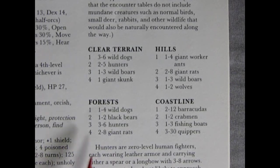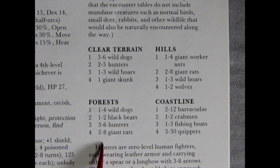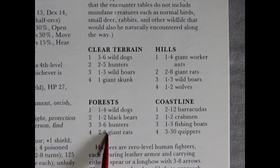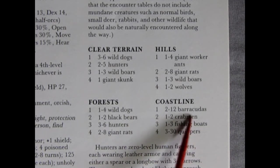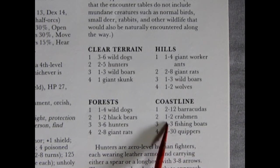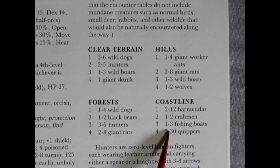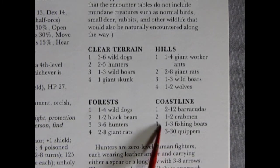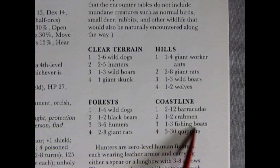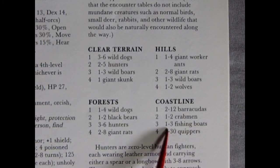So coastline, two to twelve barracuda. So that's two d6. One to two crab men, that's a d4 divided by two. One to three fishing boats is our d6 divided by two. And three to 30 quippers is three d10. So you can see how this, just trying to figure this out, you need to plan it all ahead of time.